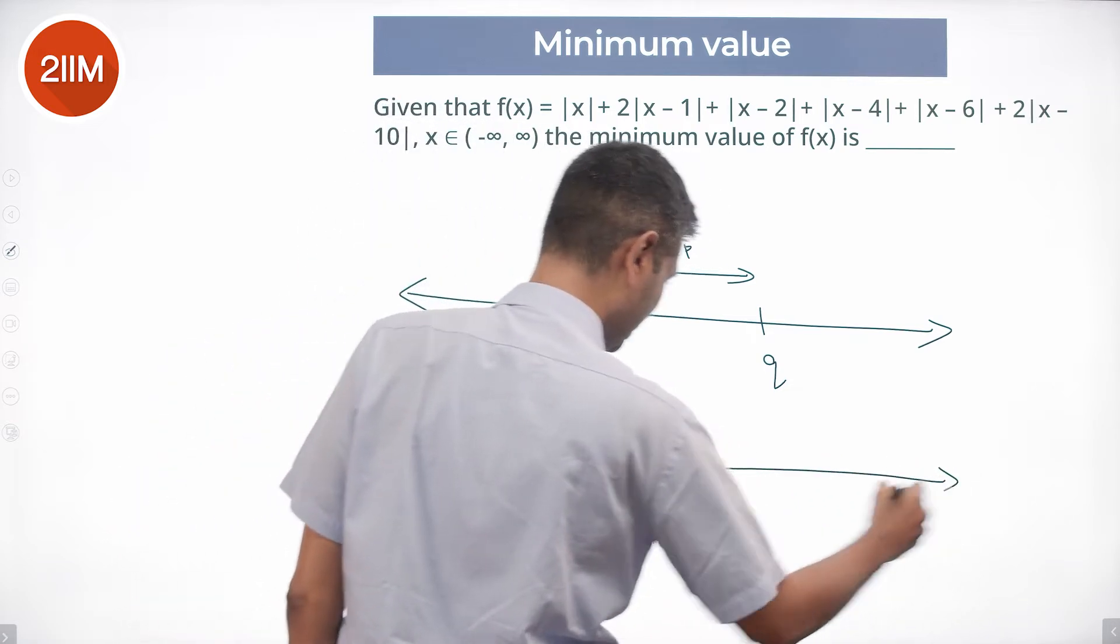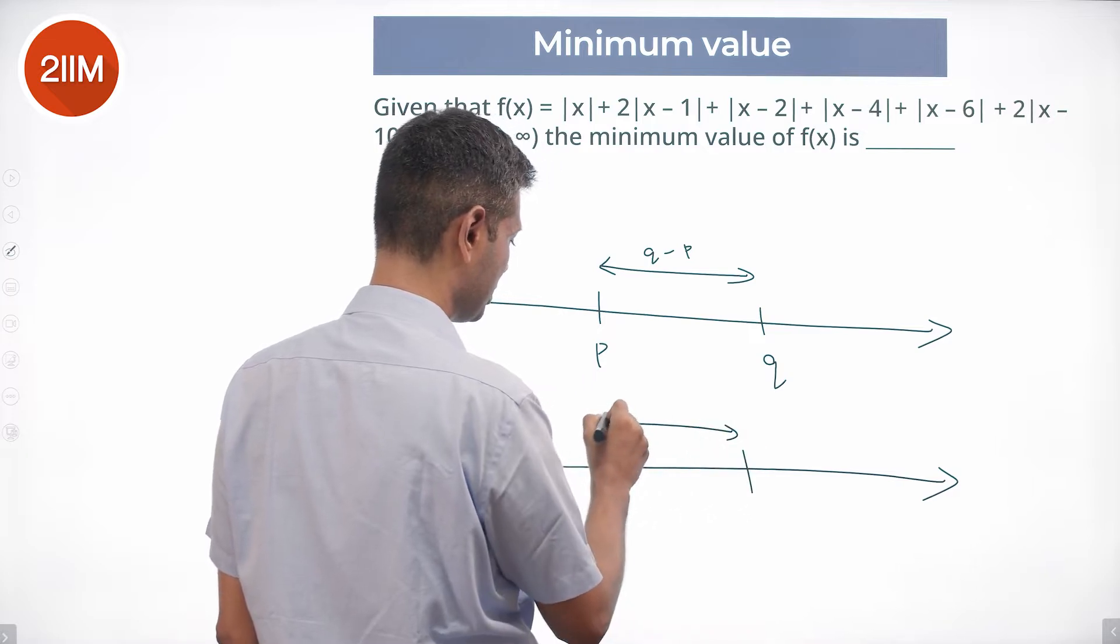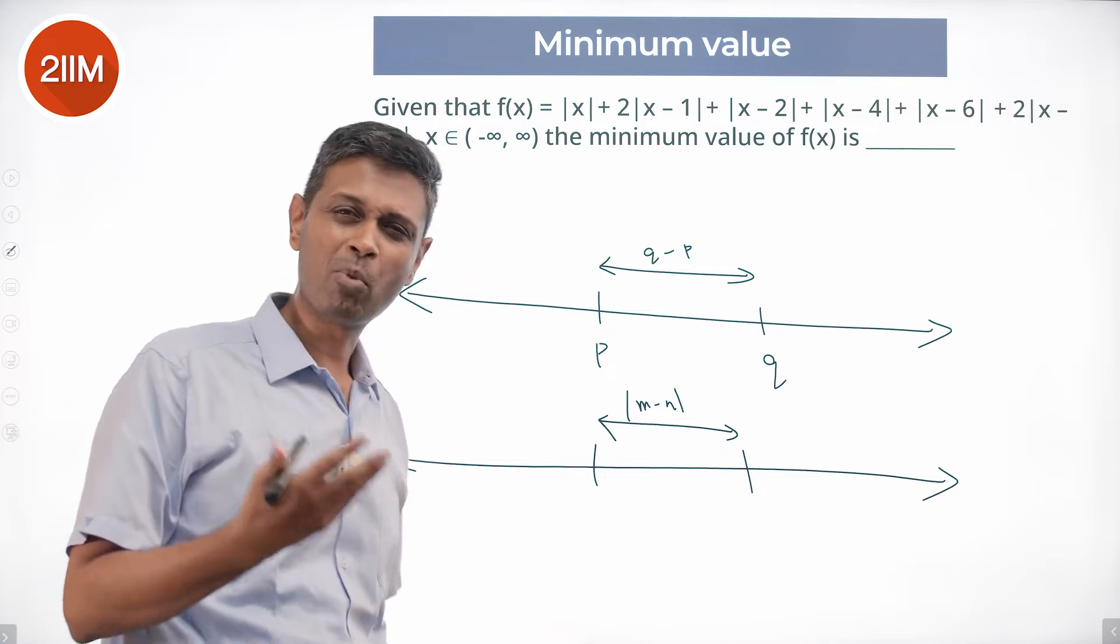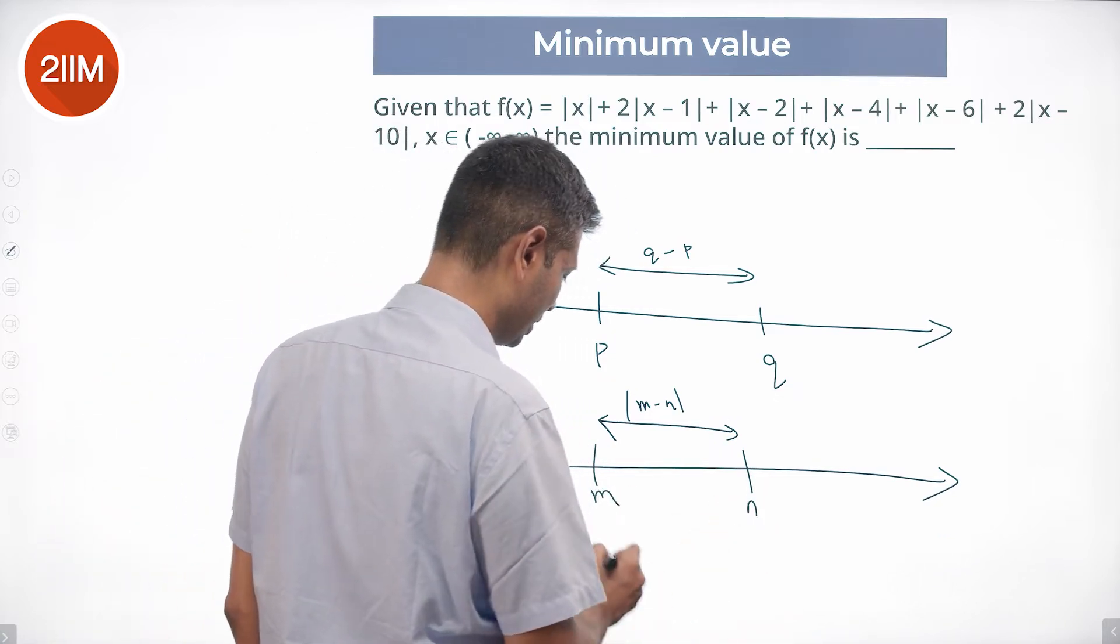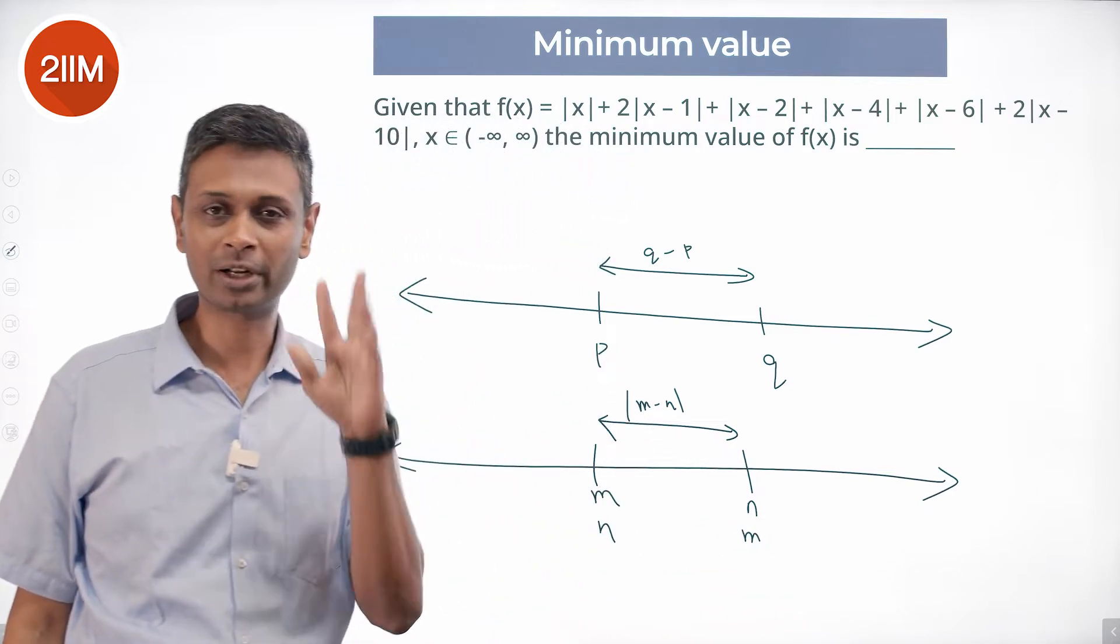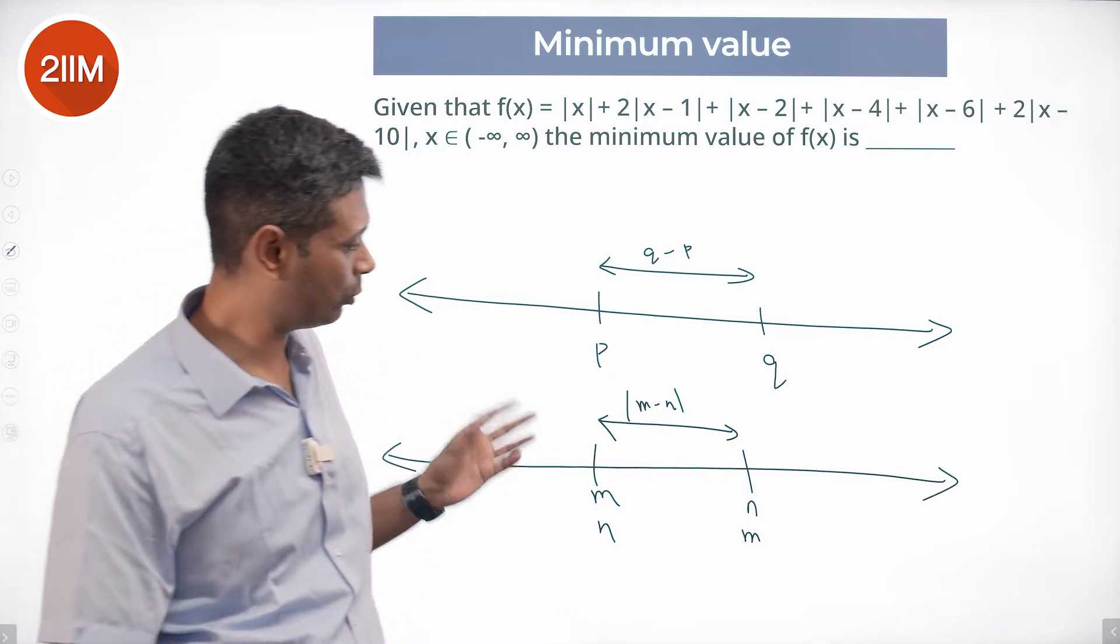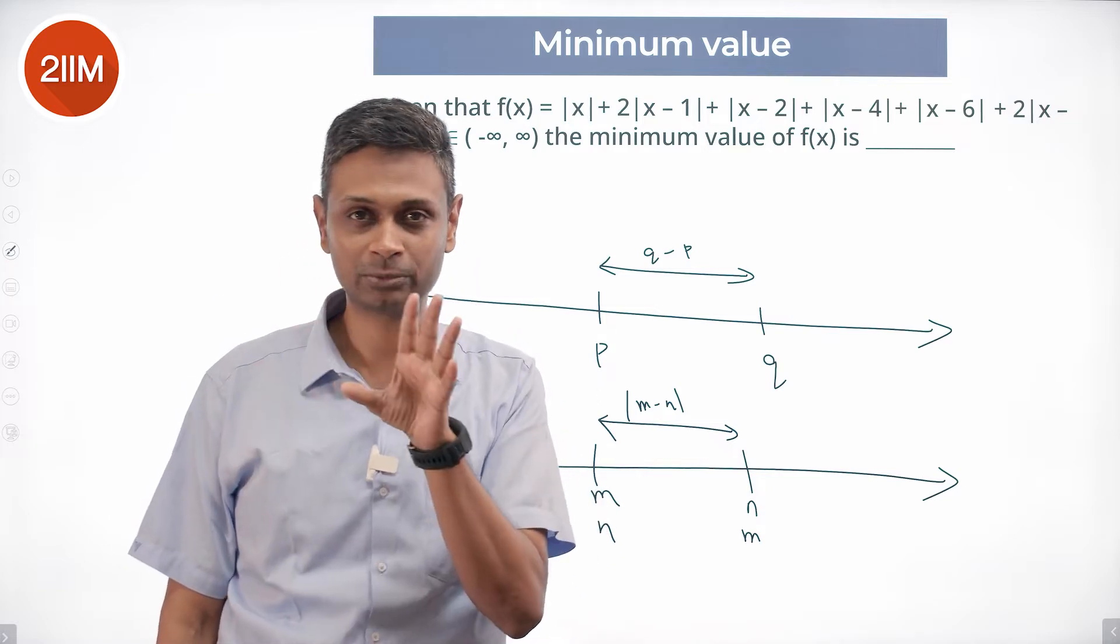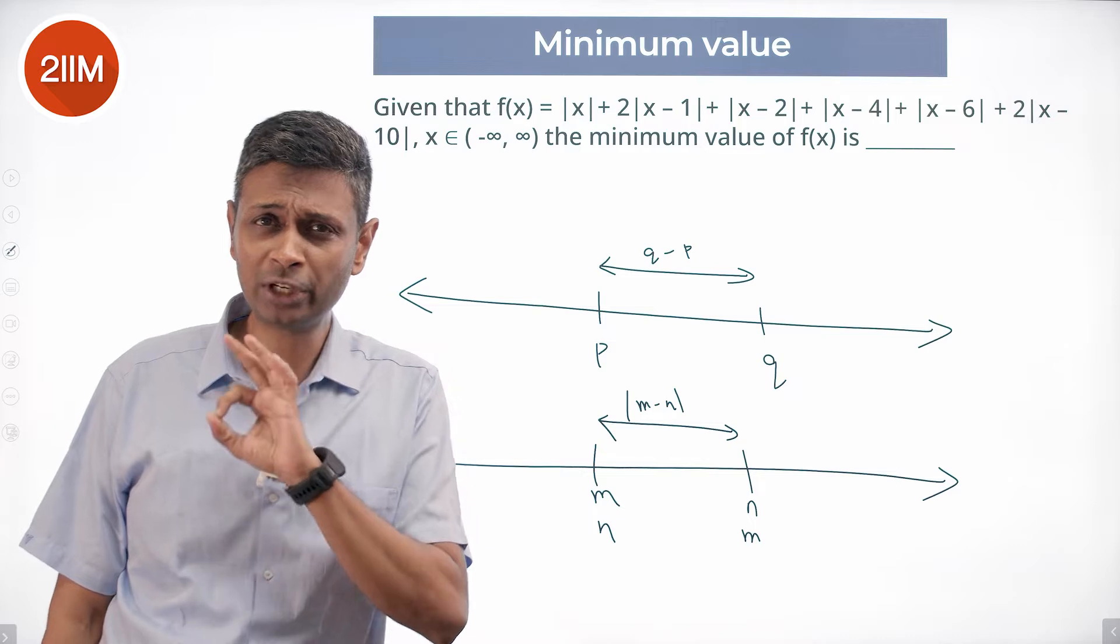More generally, for two points in the number line, the distance between them is modulus of M minus N. Why am I saying modulus of M minus N? I don't even need to know whether it is M here and N here or N here and M here. It doesn't matter. Two points in the number line, what is the distance between them? Modulus of P minus Q, modulus of Q minus P, modulus of M minus N. That idea is super powerful. So that idea is going to crack open this question brilliantly.